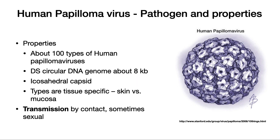Types are tissue-specific for infecting — for example, they can affect the skin or mucosa. Replication is determined by host cell differentiation states. They will first infect basal cells in the bottom of the surface they're infecting, and as those cells differentiate, the virus replicates more and more. This is important for two reasons: HPV is another example of a sexually transmitted disease, and HPV can cause cervical cancer.